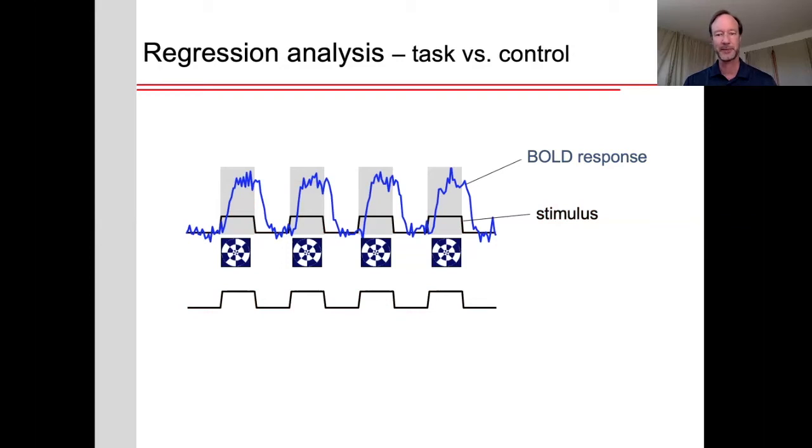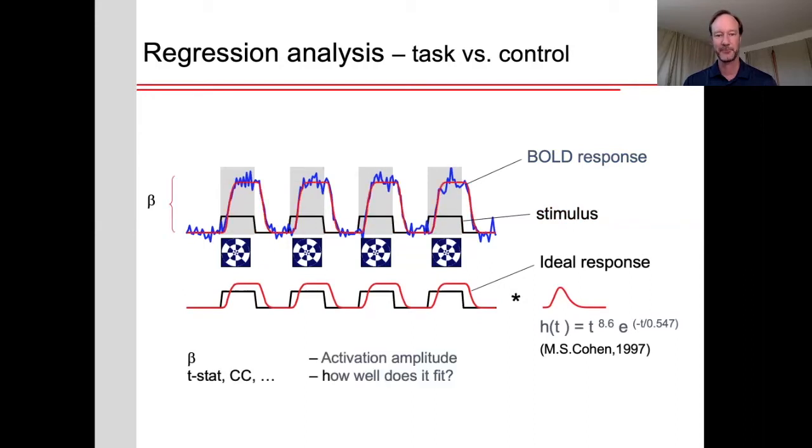The actual response is a bit delayed. And to account for that, what we can do is we can take our stimulus timing, convolve this with a hemodynamic response function, as illustrated here, and then we take this convolved response, and we fit that to the data. And then we also get the activation amplitude, and we get some statistics for how well this fit, either t-statistic or correlation coefficient.